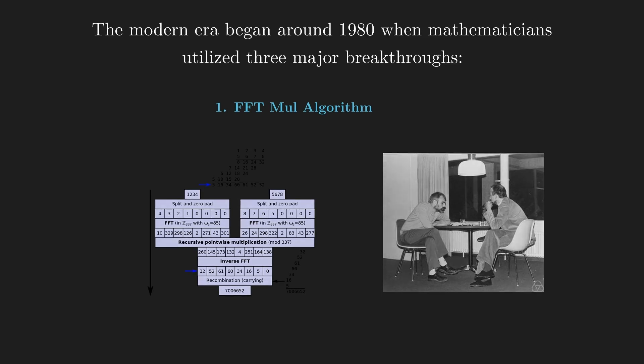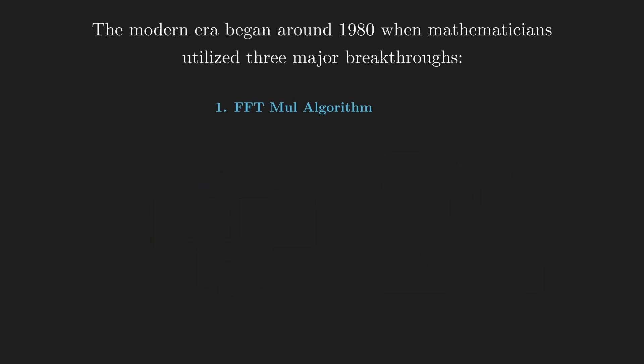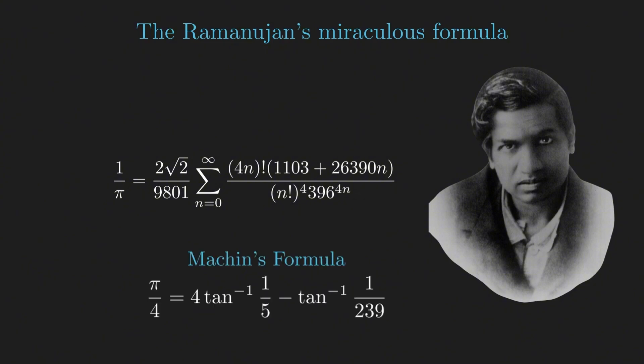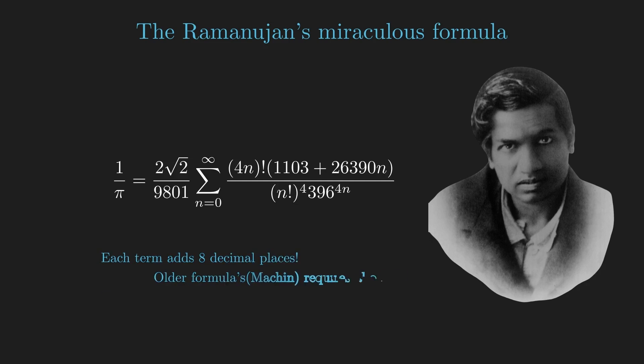Second major breakthrough was the development of new high-performance algorithms, specifically designed for the Pi. Sinevasa Ramanujan discovered miraculous formulas for Pi, which convert far faster than the previous methods like Machin's formula. Each term of the series added eight decimal places. This formula looks strange in two ways. First, it gives the reciprocal of Pi, not Pi itself. And second, Ramanujan had no proof for the formula.